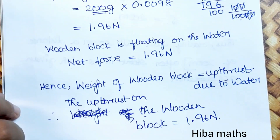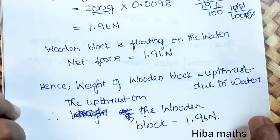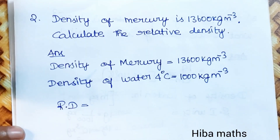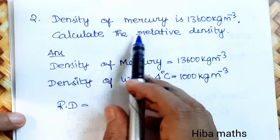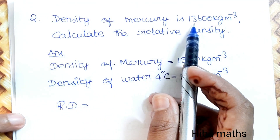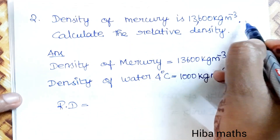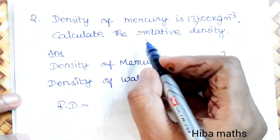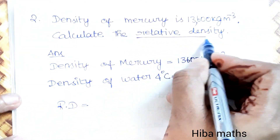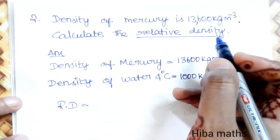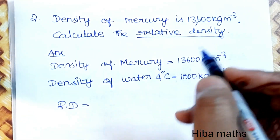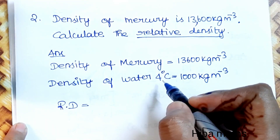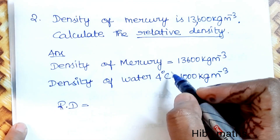This is the final answer for question one. Second question: the density of mercury is 13,600 kg per m³. We need to calculate the relative density. Relative density is calculated using density of mercury divided by density of water at 4 degrees Celsius.